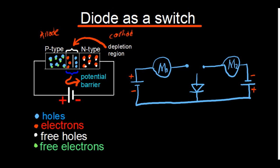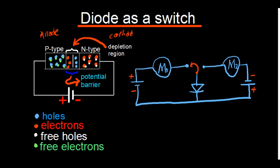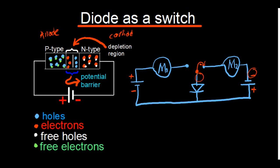The idea is: if I connect the anode end to the positive side of the cell, the motor connected there is expected to rotate — that is a forward-biased connection. For a diode to work, it needs to be in a forward-biased connection. However, if I connect to the other end where the cathode side faces the negative of the cell, Motor 2 is not going to work — that's a reverse-biased connection — because the anode is connected to the negative side of the cell.